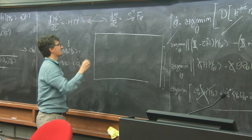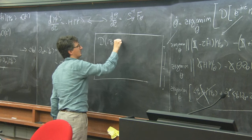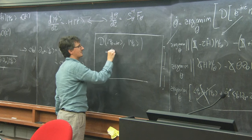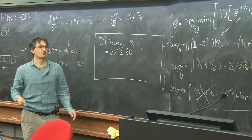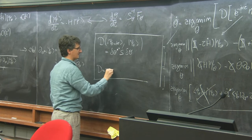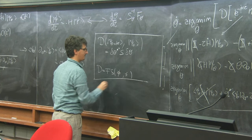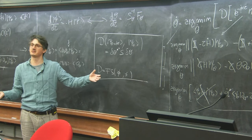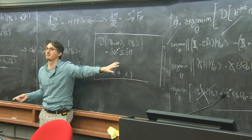You can prove that the Fubini-Study distance between psi(theta + delta_theta) and psi(theta) can be written as delta_theta^dagger * S * delta_theta. Fubini-Study distance is related to the fidelity between two states — a physically motivated distance. So S is the metric tensor of the variational manifold according to the Fubini-Study metric.